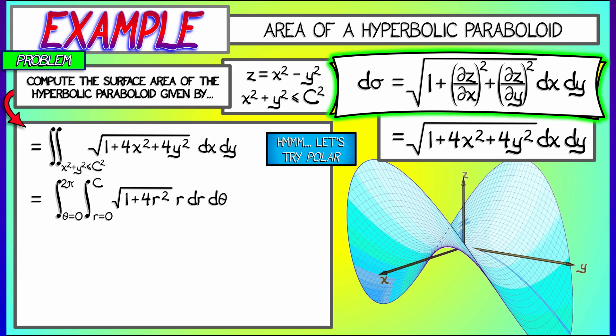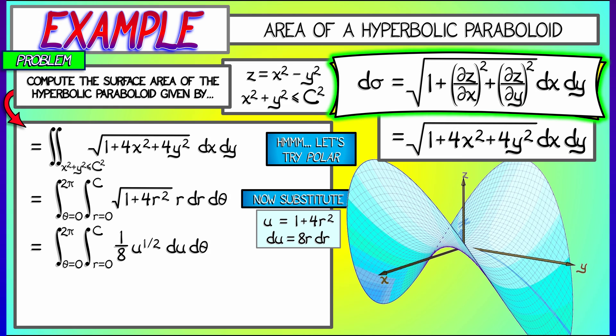Now to integrate this, it's pretty clear we should do a u substitution with u equals 1 plus 4r squared, and du equals 8r dr. My new integrand is going to be 1 eighth square root of u du d theta. Now, since there's no thetas involved, I can integrate out the theta first. That gives me theta over 8 from 0 to 2 pi.